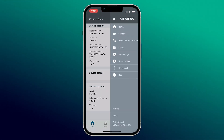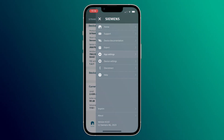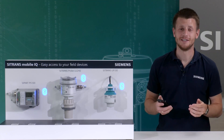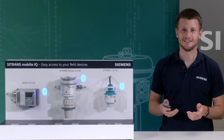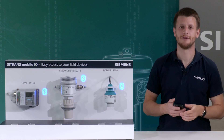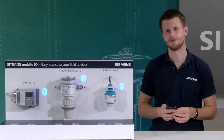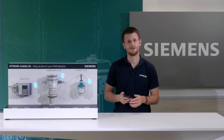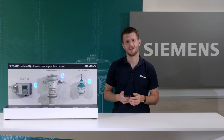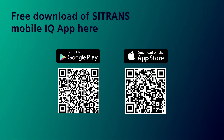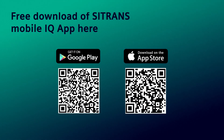And of course, you have the option to change the language of the app according to your country. Now you've seen how intuitive and easy it is to use the SITRANS MobileIQ app and what great opportunities it offers. If you don't have the app yet, you can download it for free on the common app stores. Just scan the QR code here or visit siemens.com/mobileiq for more information.